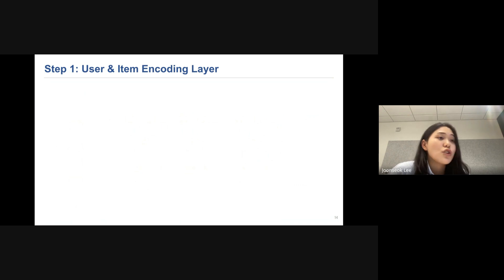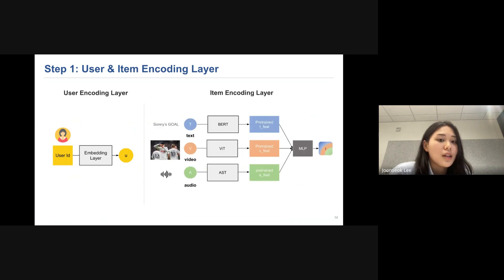So the first step is the user and item encoding layer. For users, the user ID will go through embedding layer to produce user embedding. Then item multimodal raw features will go through modality specific encoder to produce each feature embedding. Then to produce the final item embedding, we concatenate it and process through MLP layer. In this part, we train using modality alignment loss, which is contrastive loss to learn multimodal relationships through self supervision. And this loss makes modality embedding of the same item close to each other.